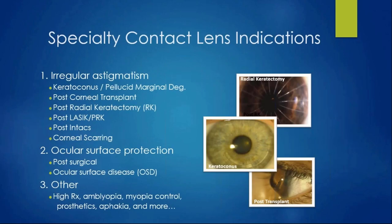When thinking about who should be fit into a scleral lens, there are many different indications. In clinic, the most common patients are keratoconus, post-LASIK ectasia, and corneal transplants. RK patients are increasingly coming in as they start to have issues. At UH we see a ton of keratoconus and a lot of RK. Ocular surface disease patients are also coming in more. Don't forget that you can also fit scleral lenses on patients with regular corneas who have high astigmatism or high refractive error and aren't doing well in a GP lens.